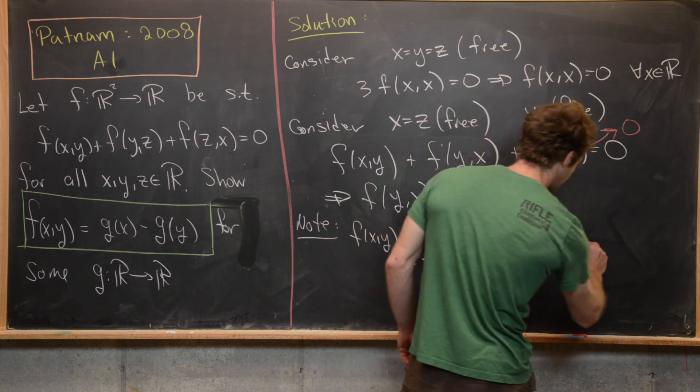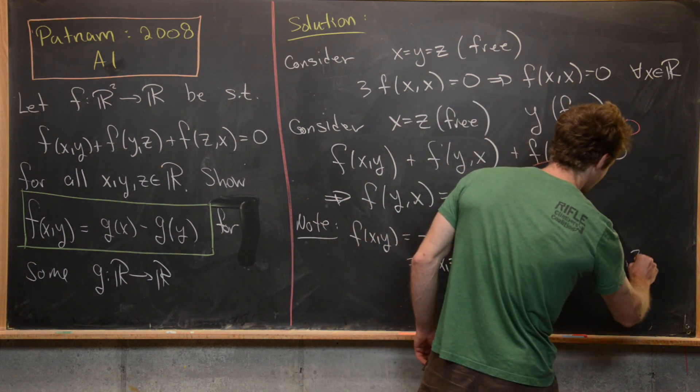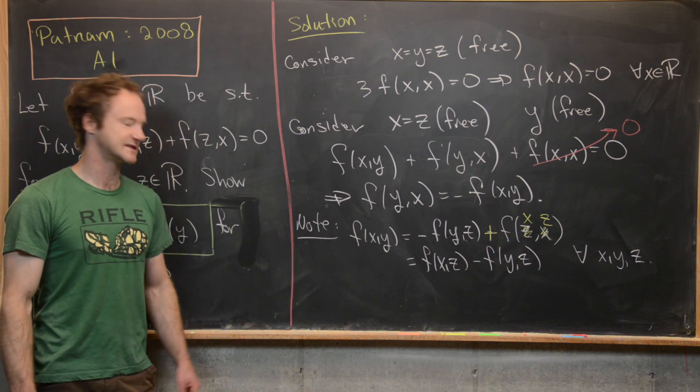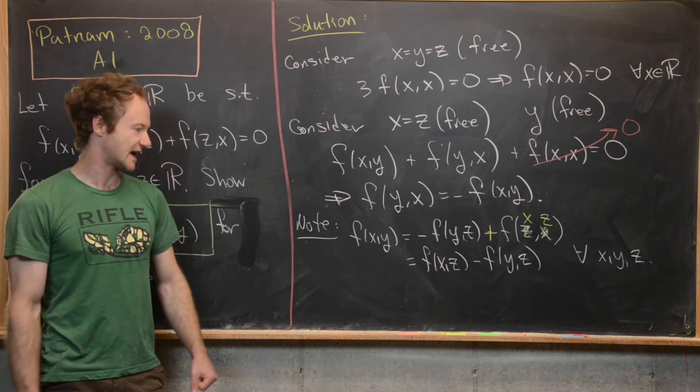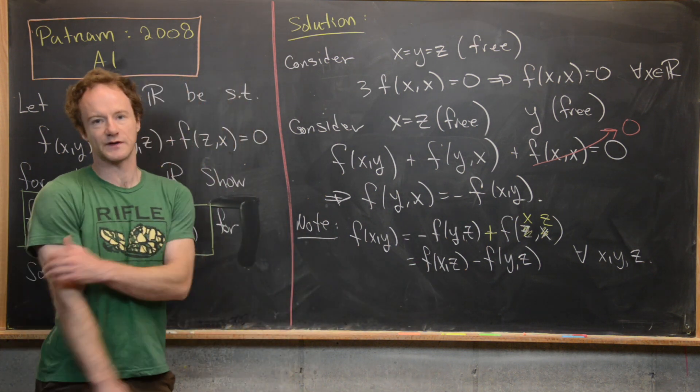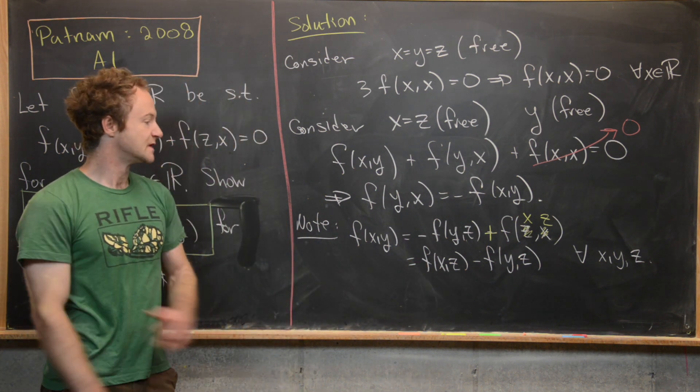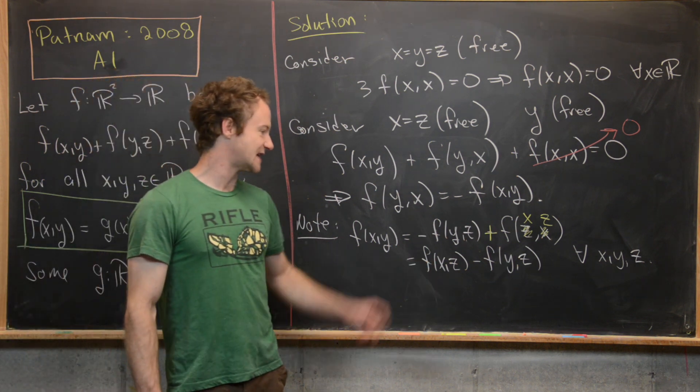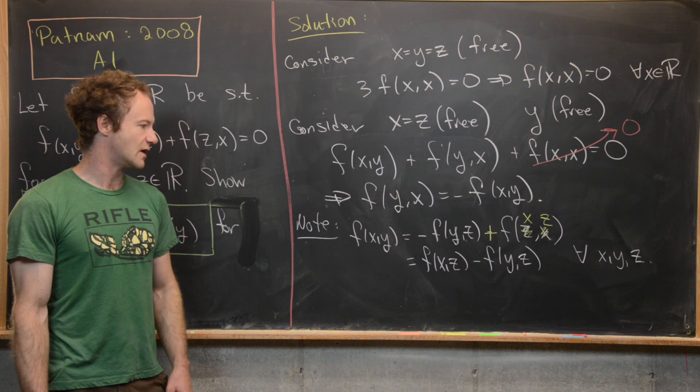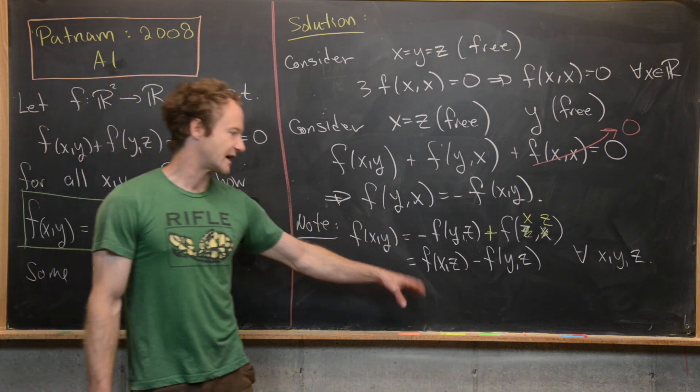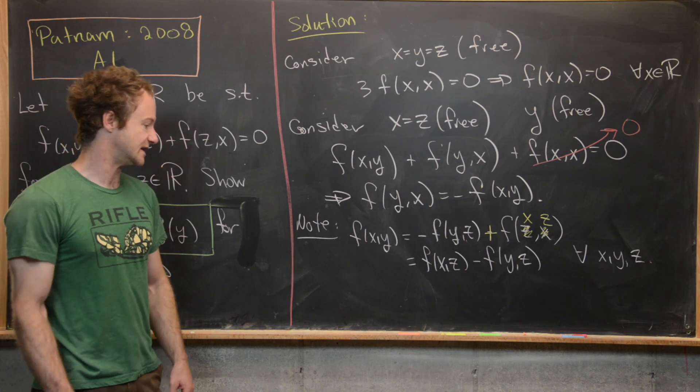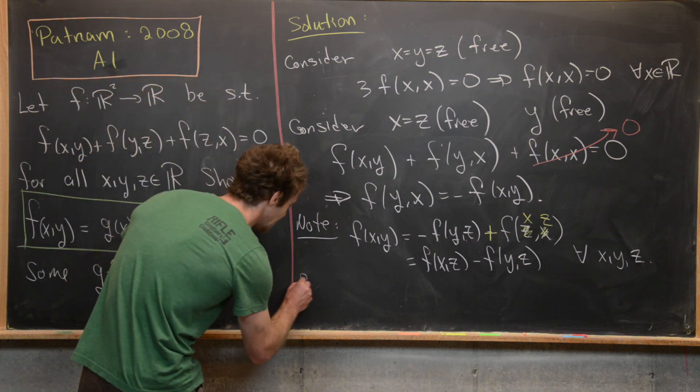But this is true for all x, y, and z. But notice what that tells us: over here on the left hand side of the equation, we only have a function of x and y, which means on the right hand side of the equation, we also only have a function of x and y. So that means that we can set z equal to really anything we want on the right hand side of the equation. And we've like killed the dependence of this right hand of the equation on z. So now you can really choose anything.